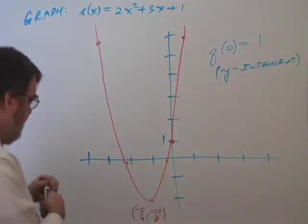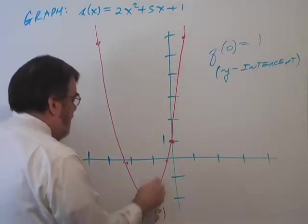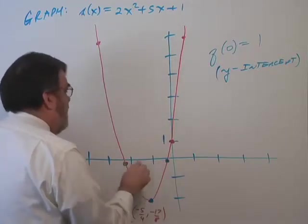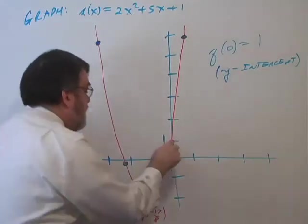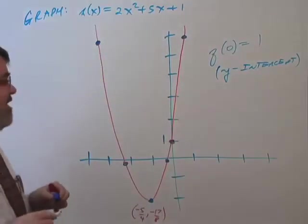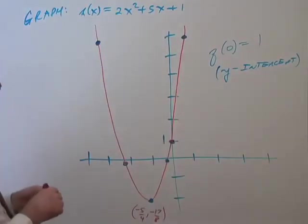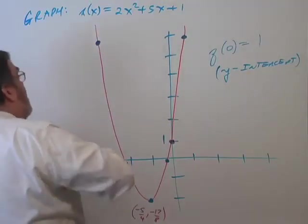Alright, so I have, on this graph, I have the vertex plotted out. I have 4 other points plotted. I also have the y-intercept plotted. Alright, so, 6 points and it's a pretty nice graph. I'll put an arrow here.